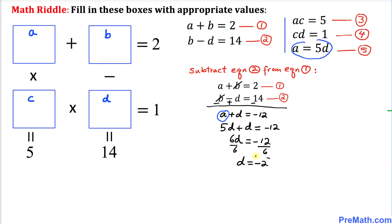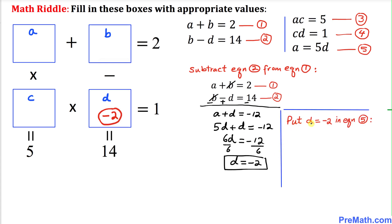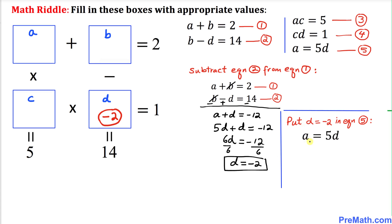We've found D equals negative 2. Now substituting D equals negative 2 into Equation 5, we get A equals 5 times negative 2, so A equals negative 10.